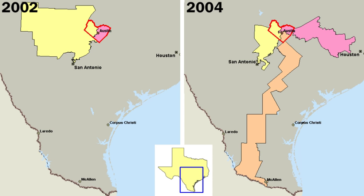American political parties are more loosely organized than those in other countries. The two major parties, in particular, have no formal organization at the national level that controls membership, activities, or policy positions, though some state affiliates do. Thus, for an American to say that he or she is a member of the Democratic or Republican Party is quite different from a Briton's stating that he or she is a member of the Conservative or Labour Party. In the United States, one can often become a member of a party merely by stating that fact.